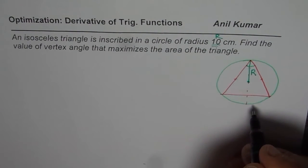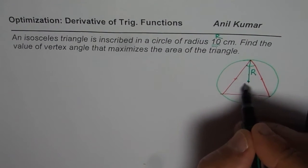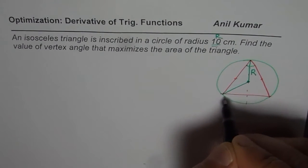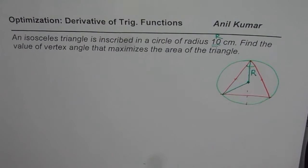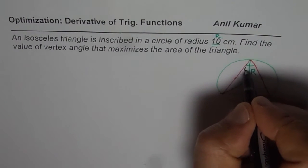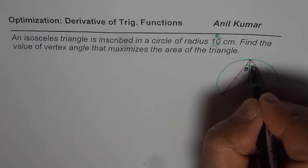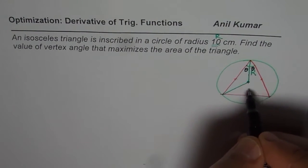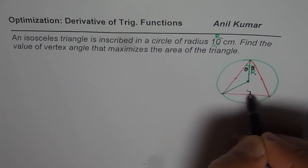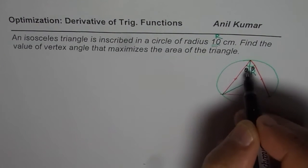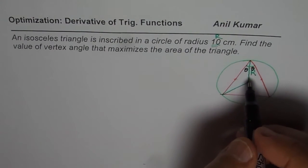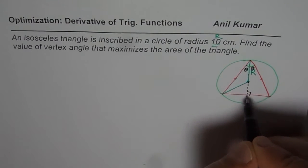How do we find that? We connect the center point with the vertex. Let the half-angle at the vertex be theta, so the vertex angle will be 2 theta. Since it is an isosceles triangle, the perpendicular from the vertex will actually bisect the vertex angle.